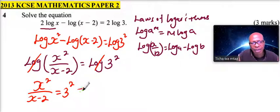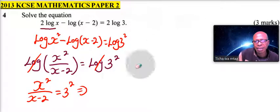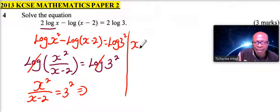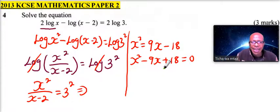You can now reorganize your equation. This can be written as x squared is equal to, we cross multiply, 3 squared is the same as 9, so it is 9x minus 18. So we bring 9x to this side, we have x squared which changes to minus, we have 9x, and 18 changes to positive, so we have plus 18 is equal to 0.